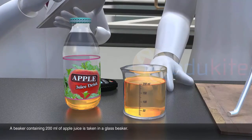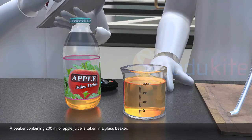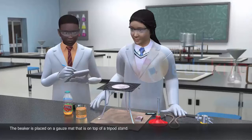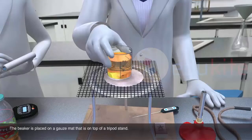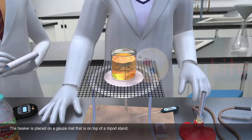A beaker containing 200 milliliters of apple juice is taken in a glass beaker. The beaker is placed on a gauze mat that is on top of a tripod stand.